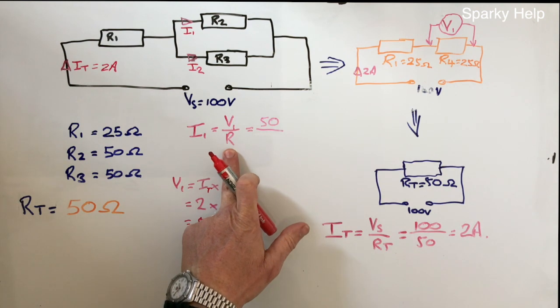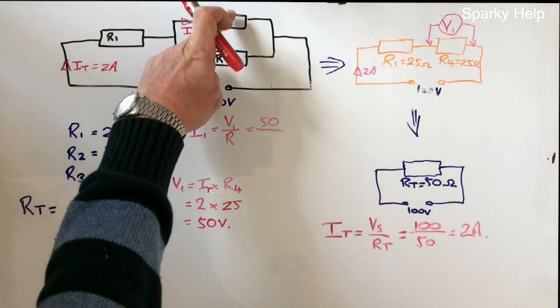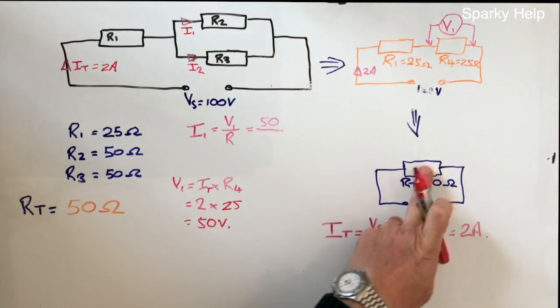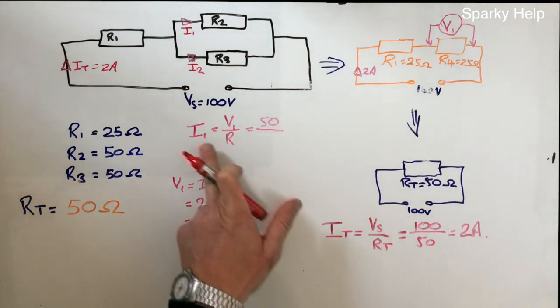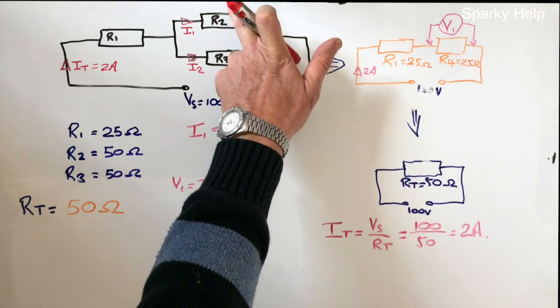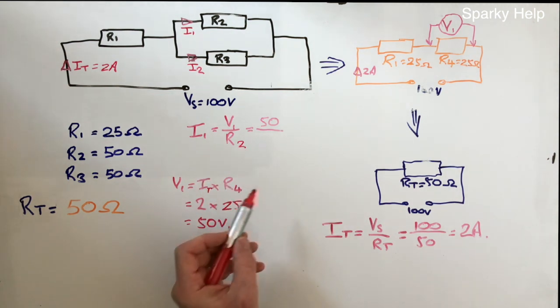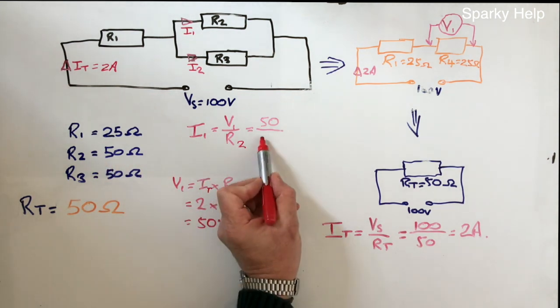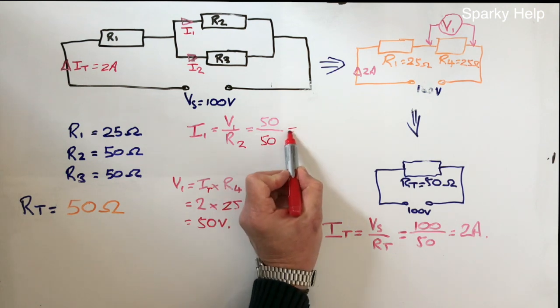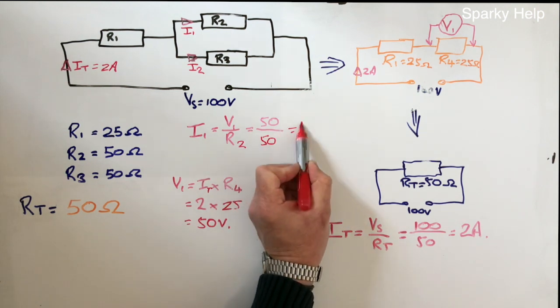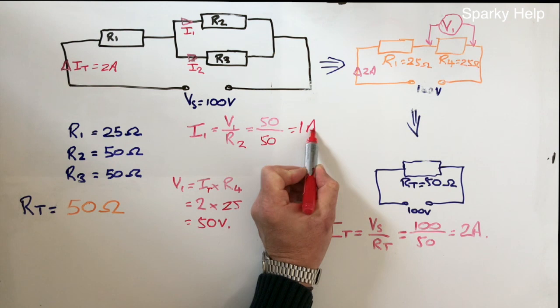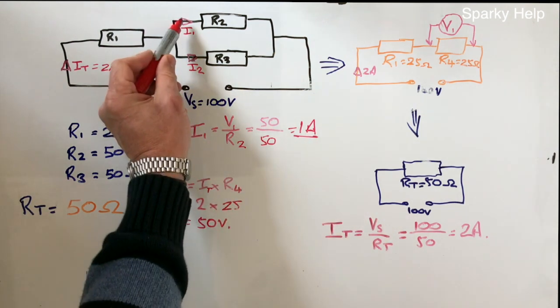And then you divide by R. Well, there's actually 1, 2, 3, 4, 5 different R's on here. But because we want to find the current through that one, it's R2. So that becomes R2, which is 50. So 50 divided by 50 is 1 amp. That's our current air.